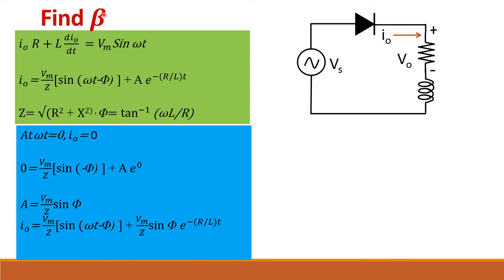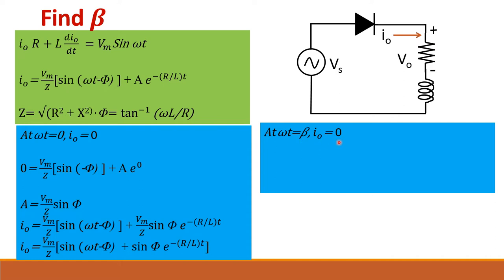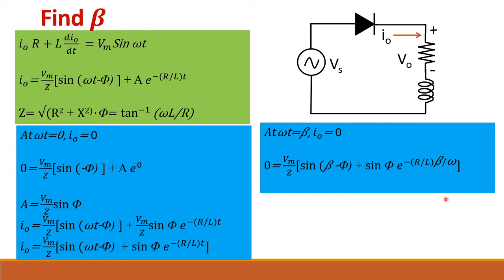We still have not found beta. Apply one more boundary condition: at ωt equal to beta, I naught also equals 0. Substitute ωt equal to beta into the expression. This equation is not easy to solve since it involves trigonometric functions — you can solve it using a computer. Once you know beta, you can substitute it into the average value and RMS value formulas to find numerical values for V average and V RMS.